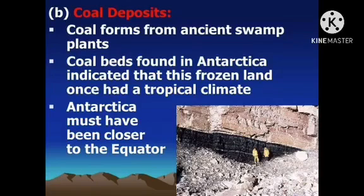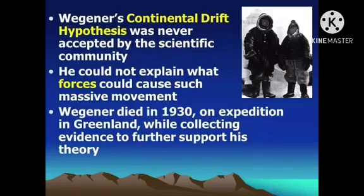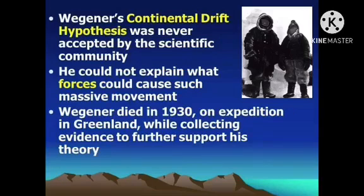This leads to the idea that Antarctica once experienced a tropical climate and might have been closer to the equator. The question of how the drifting took place left the continental drift theory incomplete. Despite the evidence presented by Wegener, his idea that the continents were once joined together was not accepted by the scientific community until the 1960s. He was not able to explain how this drifting took place, prompting scientists to conduct further studies. Wegener died in 1930 on an expedition in Greenland while collecting evidence to further support his theory.